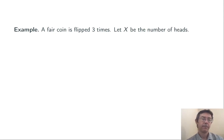Here's an example. A fair coin is flipped three times. Let X be the number of heads. So we're going to flip the coin three times and count the number of successes, the number of heads. Here we're looking at b(3, 0.5). Three trials, probability of success of 0.5 in every trial.